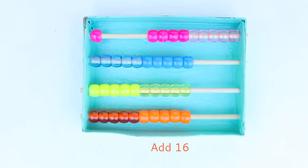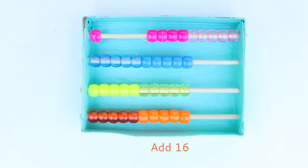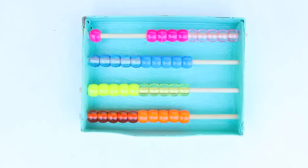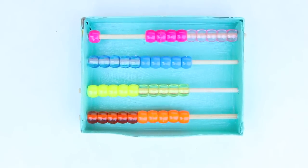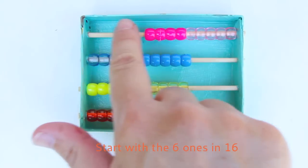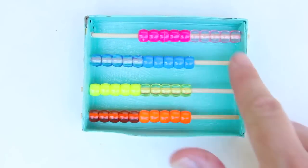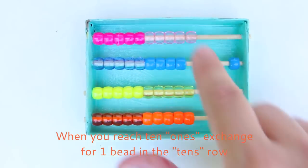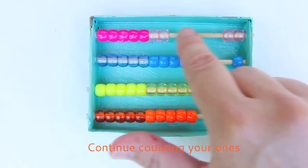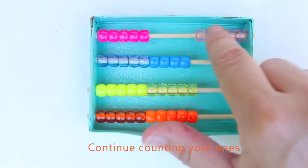Next we're going to add six ones from the number 16. Start by counting your remaining beads in the ones row. One. When you get to 10, exchange that for one bead in the tens row. And then continue counting: two, three, four, five, six.